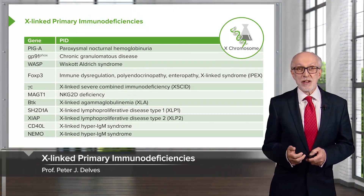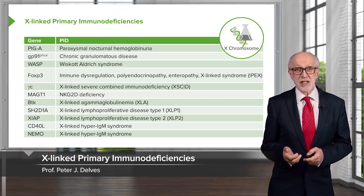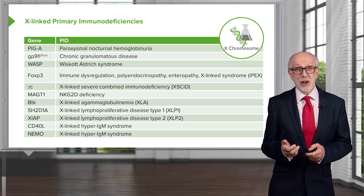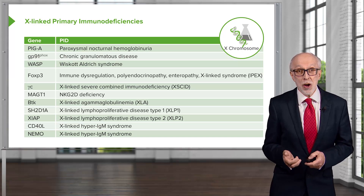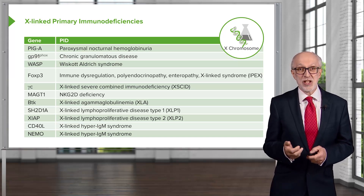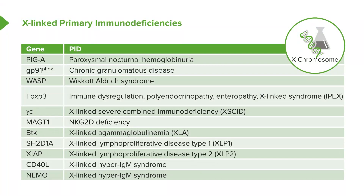Quite a few primary immunodeficiencies are caused by genes that are present on the X chromosome, and therefore these diseases are more common in boys. Here is a list of some of the X-linked primary immunodeficiencies — there are a number of these, and we will be discussing some of them a little later in this lecture.